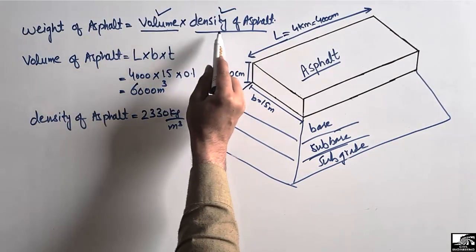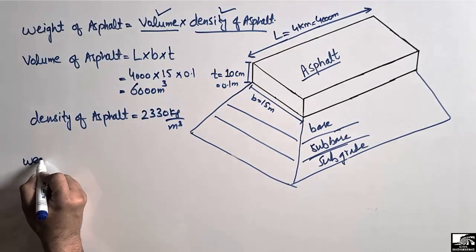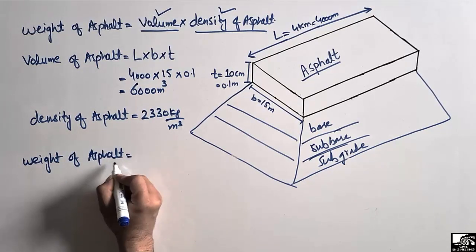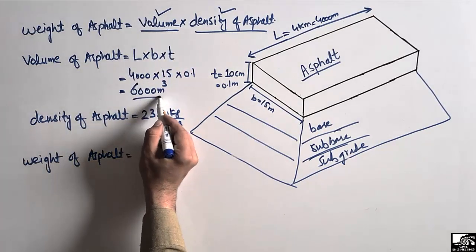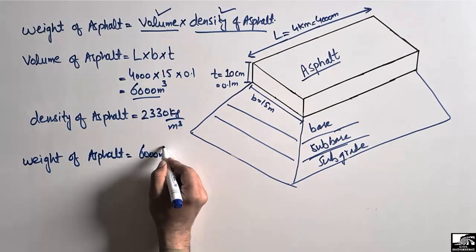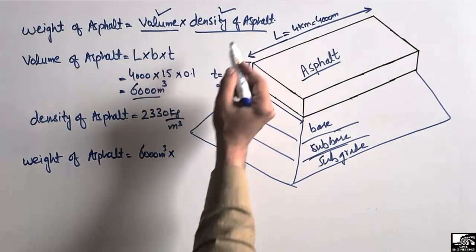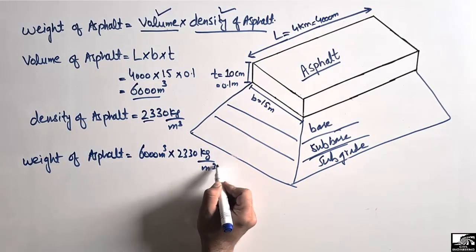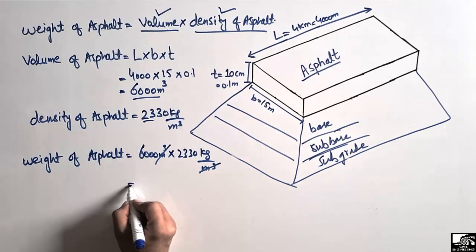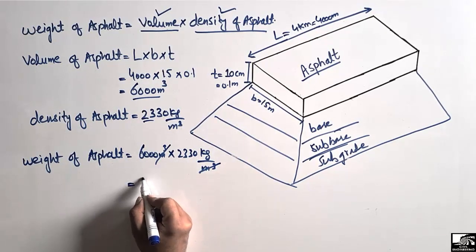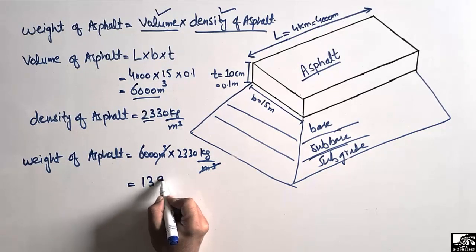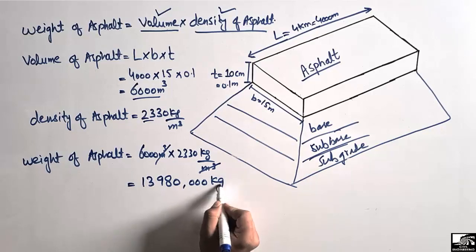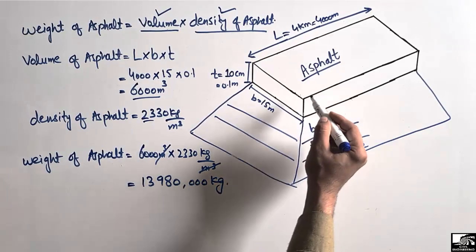Now, by multiplying the volume and the density, we get the weight of asphalt. Volume is 6000 cubic meters multiplied by density of 2330 kilograms per cubic meter. The cubic meters cancel out, giving us units of kilograms. The result is 13,980,000 kilograms of asphalt used in this road.